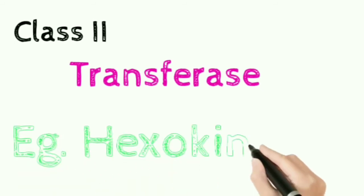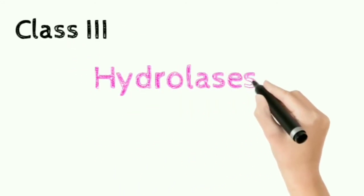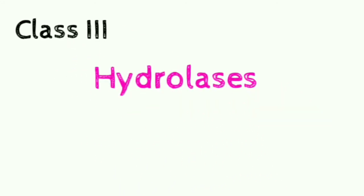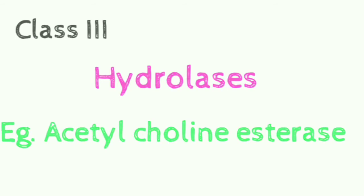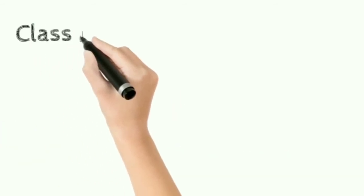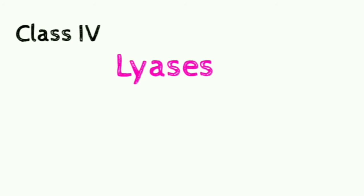Next group, Class 3, is hydrolases, which cleaves bonds like ester, ether, etc. by adding water. An example of this group is acetylcholinesterase. Next group, that is Class 4, is lyases. This group cleaves bonds.